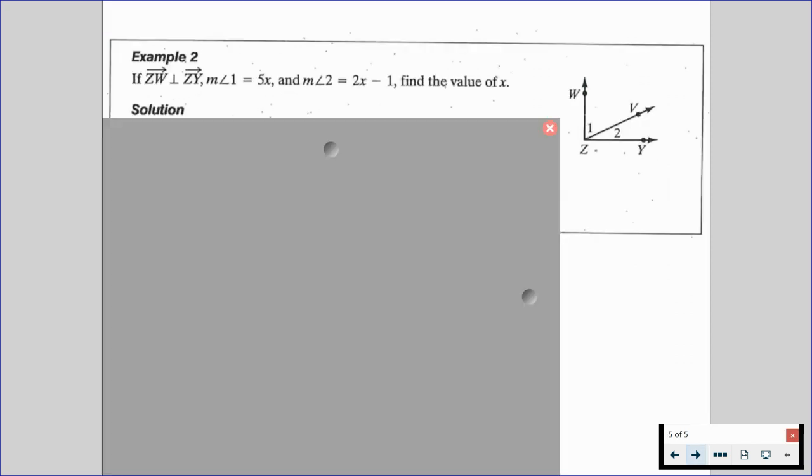In this second example, we're given a diagram on the right-hand side. We're also given that ray ZW is perpendicular to ray ZY, the measure of angle 1 is equal to 5X, the measure of angle 2 is equal to 2X minus 1, and we're asked to find the value of X.